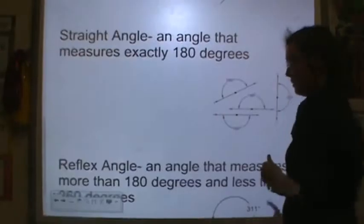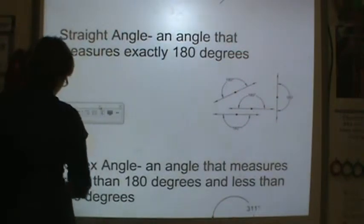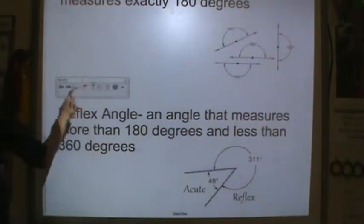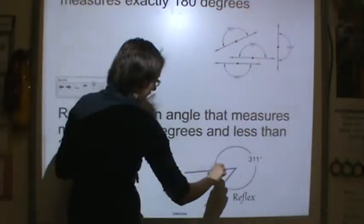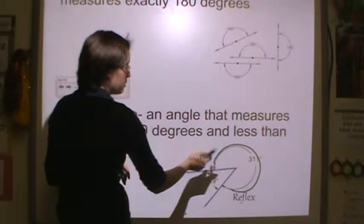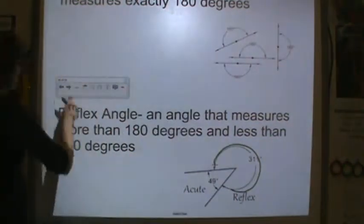And then the last angle that we have to talk about is a reflex angle. A reflex angle is an angle that measures more than 180 degrees and less than 360 degrees. So this angle right here is the reflex angle on the outside. The inside is an acute angle.